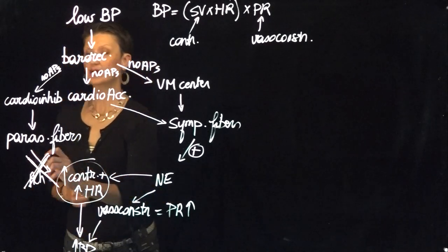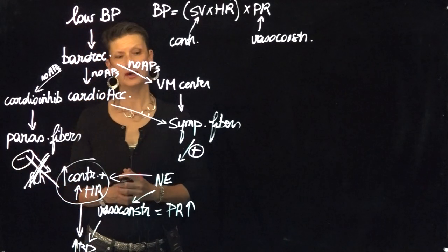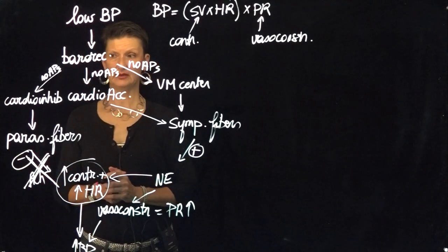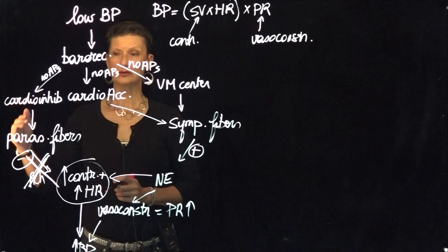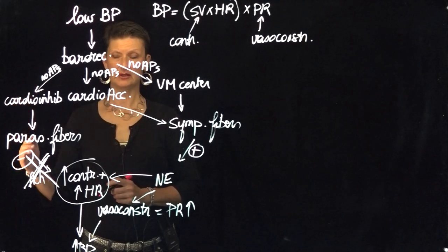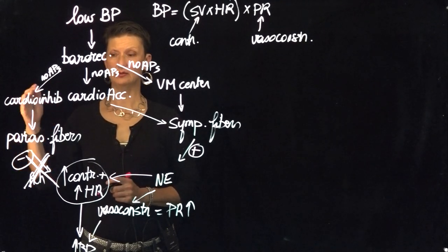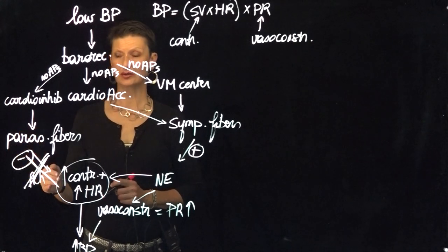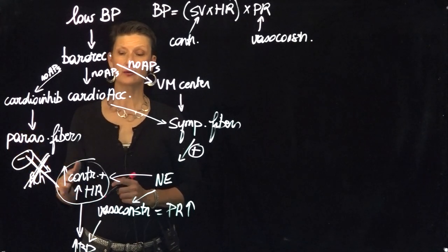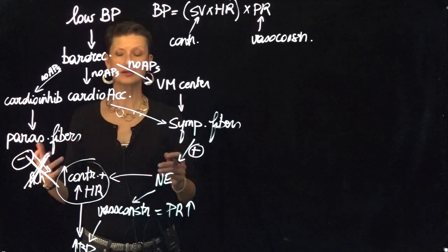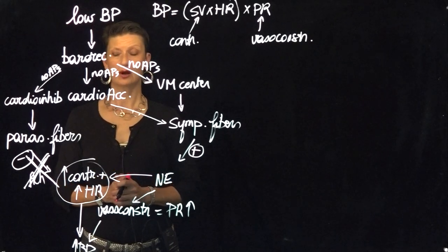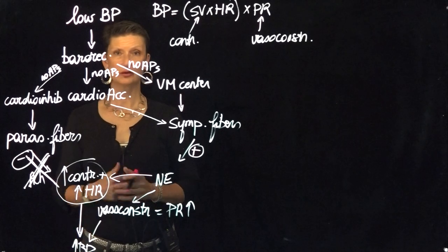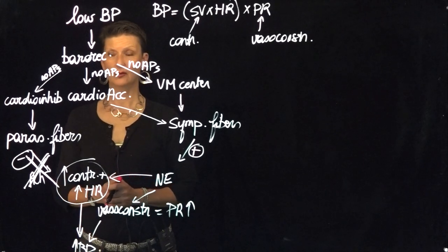In other words, they're going to be inhibited — a minus there for inhibition of those parasympathetic fibers. So the cardioinhibitory center communicates with the parasympathetic fibers such that those parasympathetic fibers are not going to secrete that acetylcholine. And therefore, they cannot slow down contractility, slow down heart rate, and therefore are not going to keep that blood pressure low.